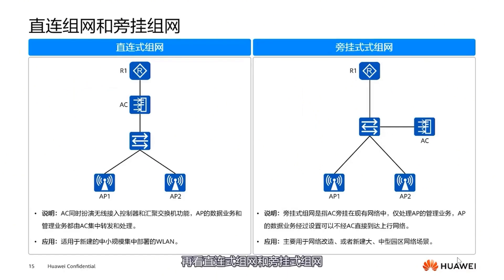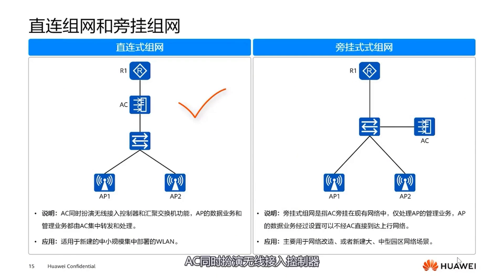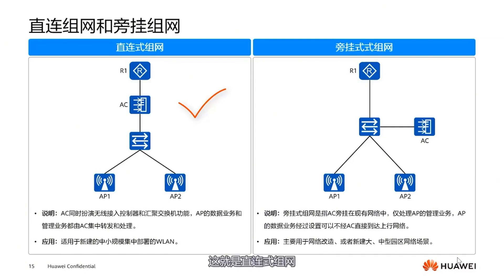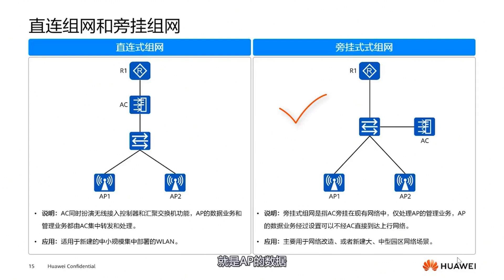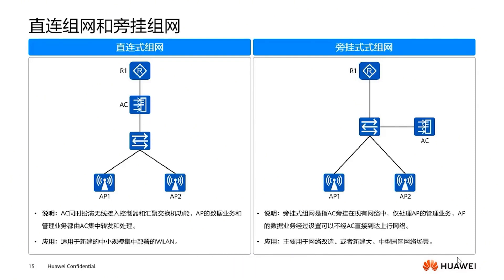Now let's consider direct connect and bypass networking. For direct connect networking, typically the AC acts both as a wireless access controller and a convergent switch. That means when APs send data, it must go through the AC — that's the essence of direct connect networking. On the right, the AC in a bypass setup means that AP data does not necessarily go through the AC. This setup is a bypass networking model.